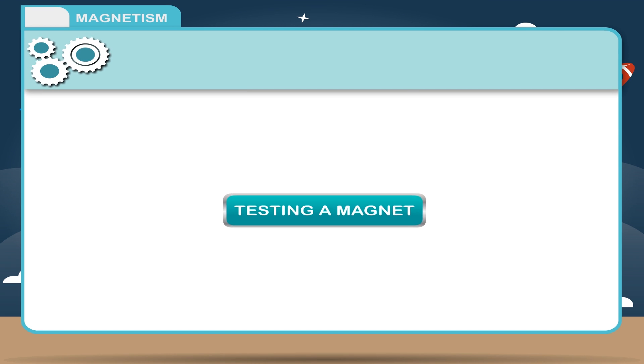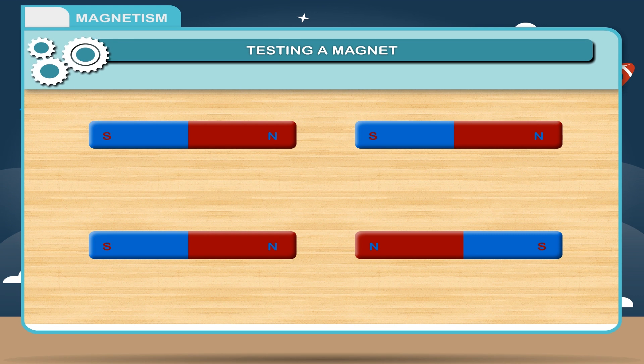Testing a magnet: A magnet can attract a magnetic substance as well as the opposite pole of a magnet. But repulsion occurs only in between two like poles of two different magnets. So, we can say that repulsion is the surer way of testing a magnet.